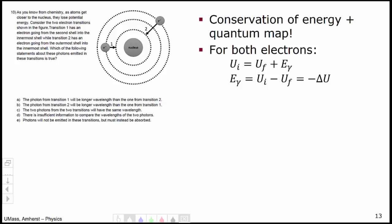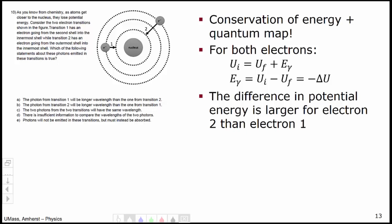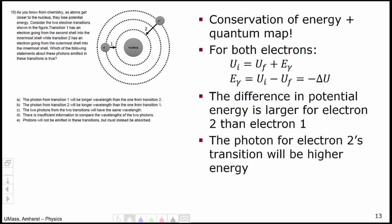The difference in potential energy is larger for electron 2 than it is for electron 1. As electron 2 gets closer to the nucleus, it has a larger change in potential energy, which means that the photon for electron 2's transition will be a higher energy photon, and therefore higher frequency, and therefore shorter wavelength.